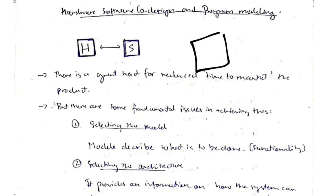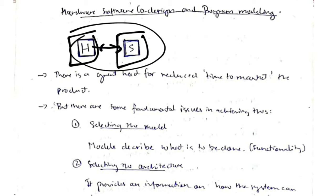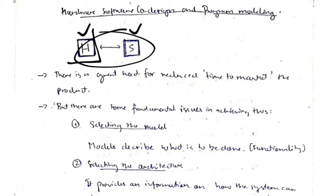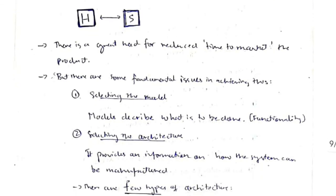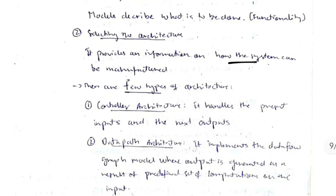To make product manufacturing fast, hardware and software must be combined, meaning hardware and software engineers must cooperate in parallel. However, there are a few issues: the first is selecting the model — describing what is to be done, i.e., functionality. The second is selecting the architecture — how the system is to be manufactured.